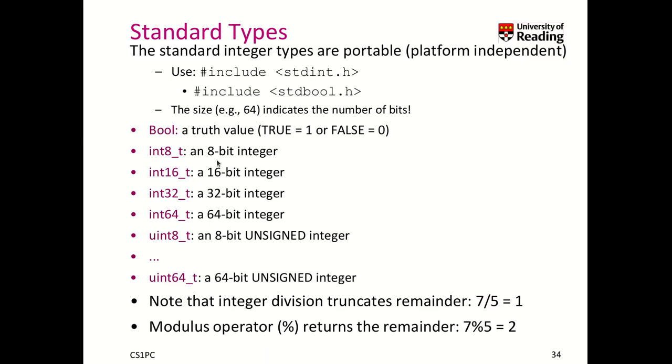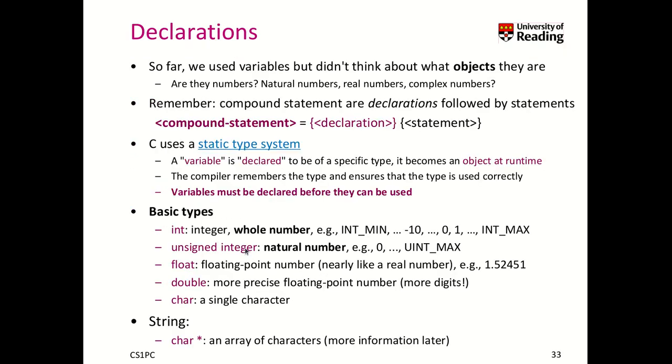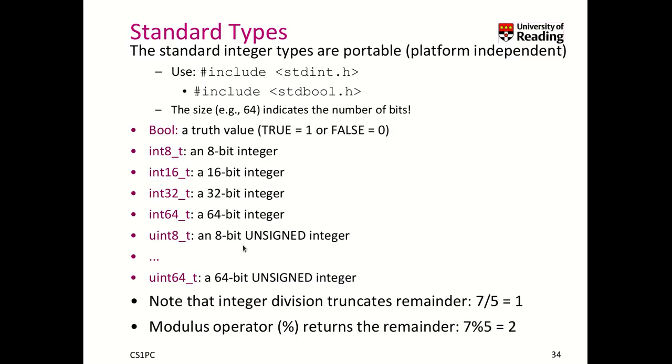There is in C standard types that are quite portable, that means platform independent. I strongly recommend to use them because they are more clear than using like int or unsigned integer, for instance. So to use them, you have to include stdint.h and include stdbool.h. Then you can use the data type bool, which is a truth value. And you can use data types like this. And this means how many bits it has. So U stands for unsigned. So basically you can have here an unsigned integer that is 8 bit long.